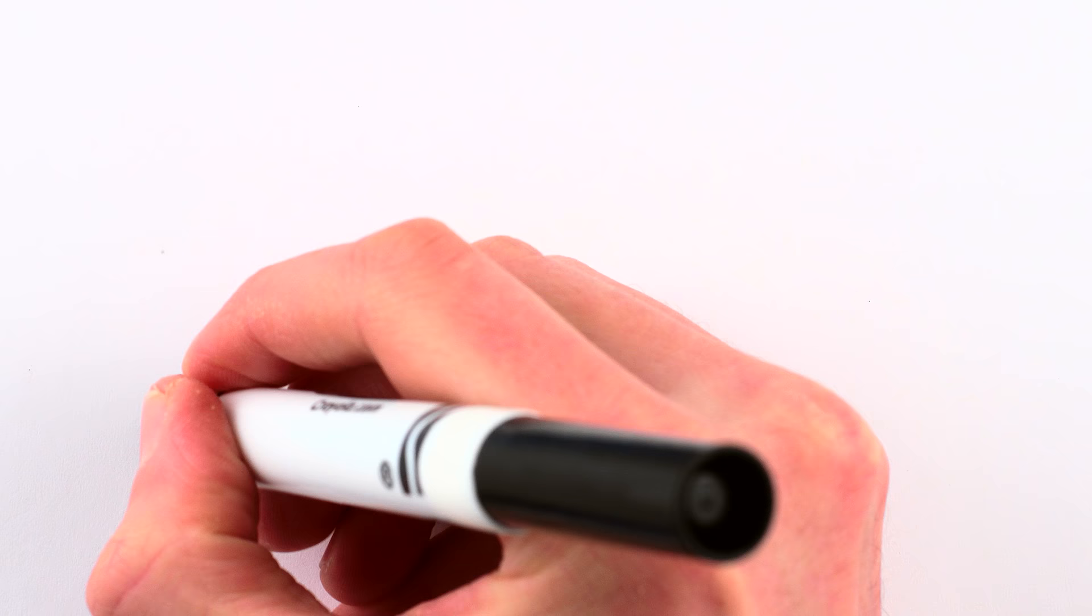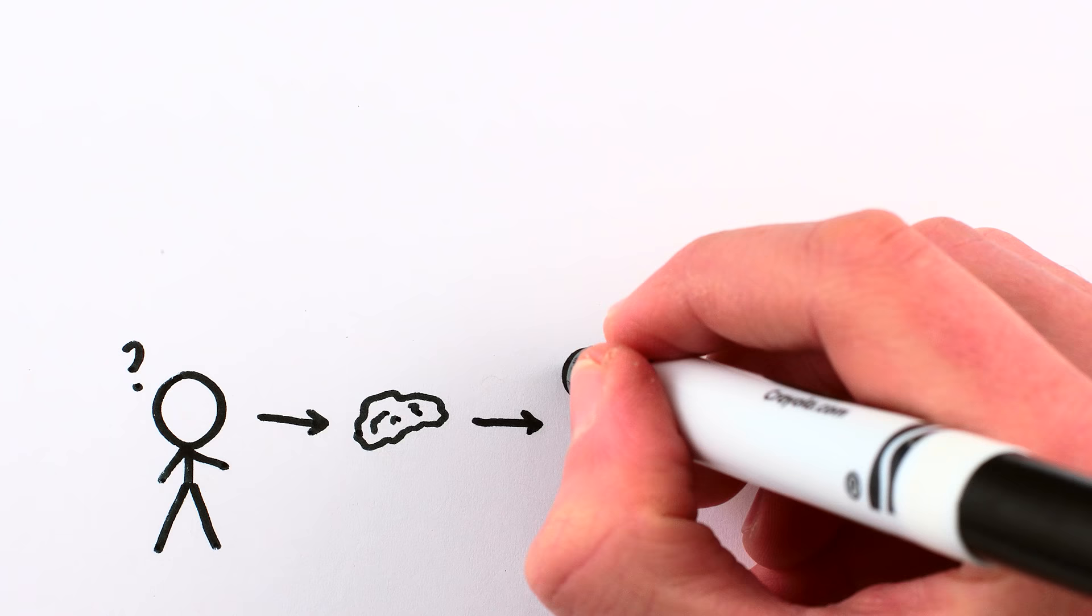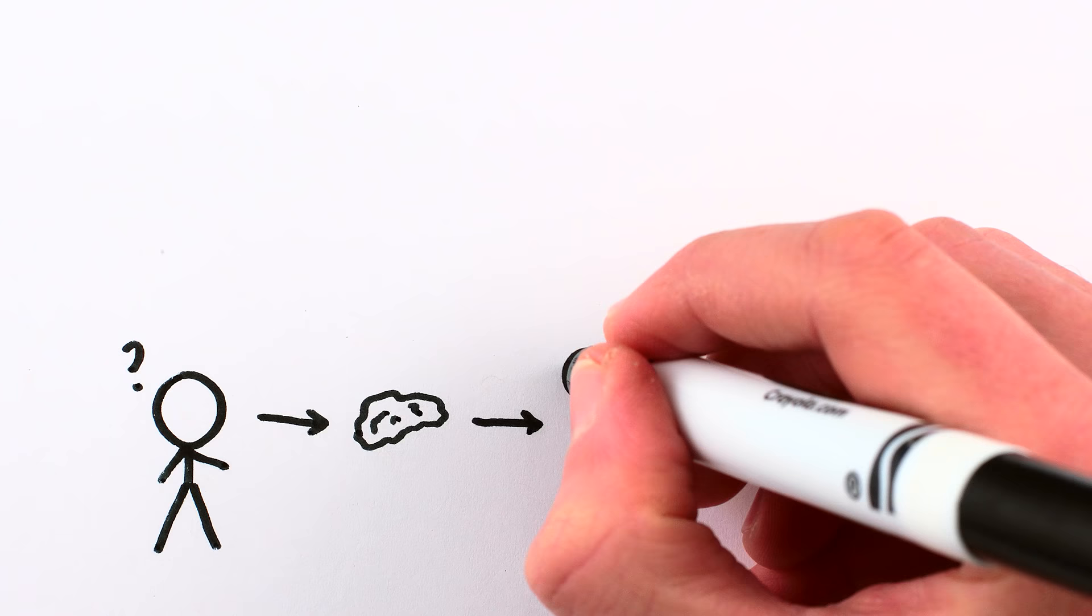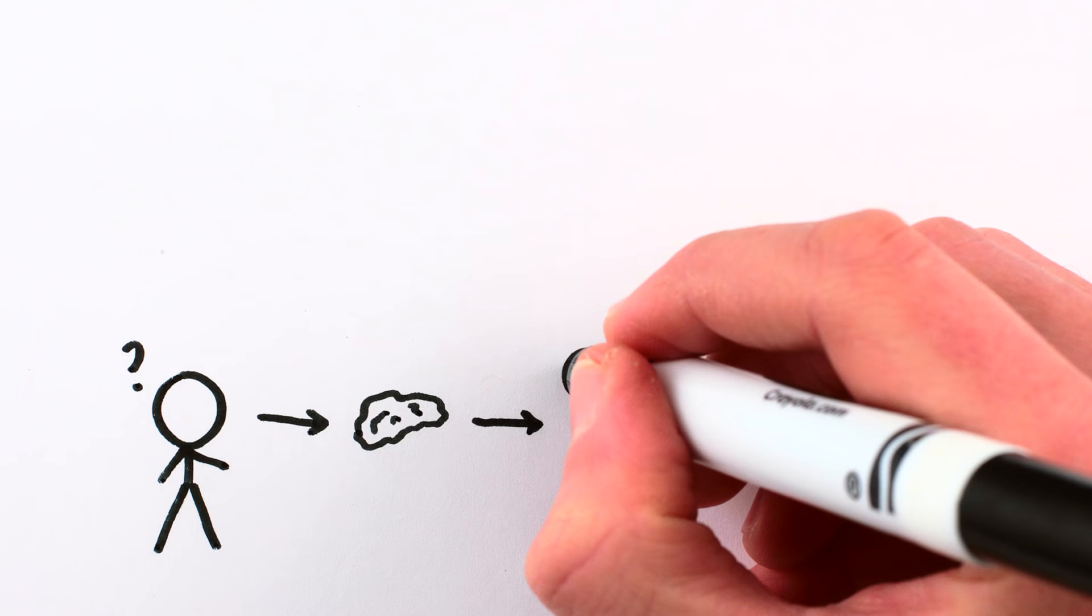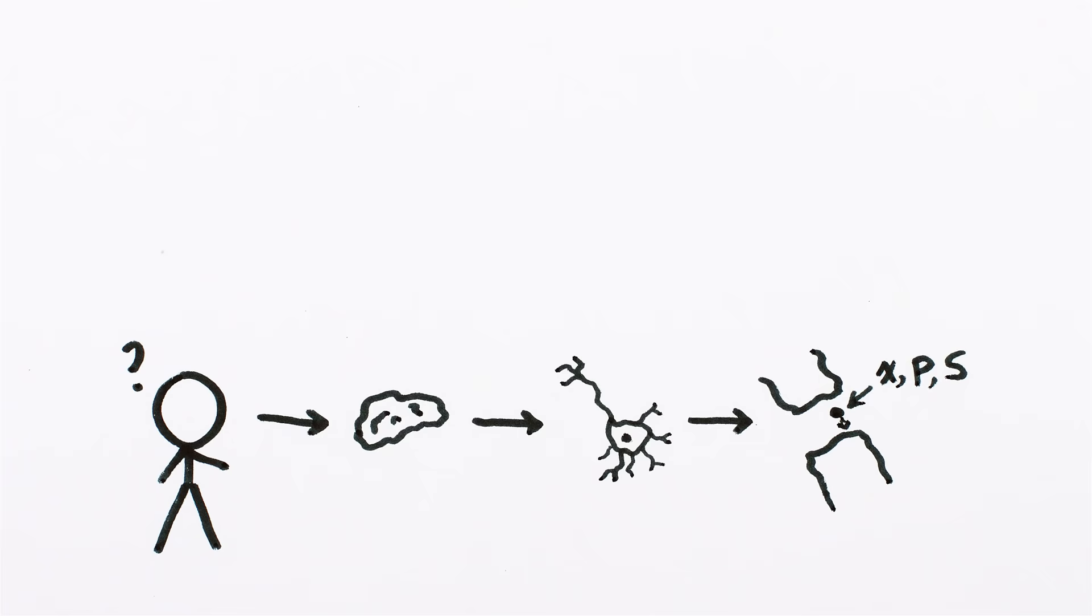Is a perfect copy, identical even at the subatomic level, even possible? Like can you make a copy of my brain down to the neuron and beyond so that even the position, momentum, and spin of every single sodium ion moving between neurons is exactly, indistinguishably the same as in the original?